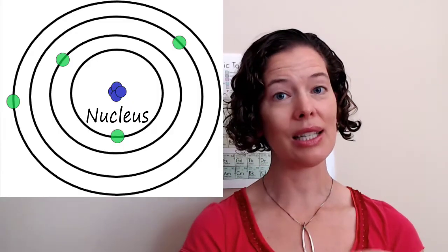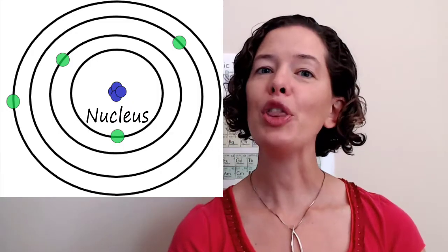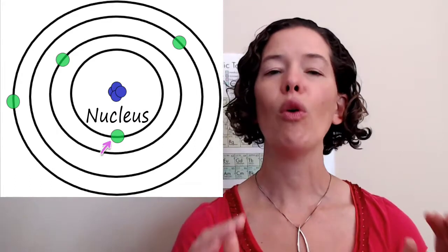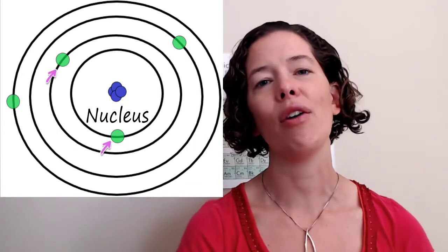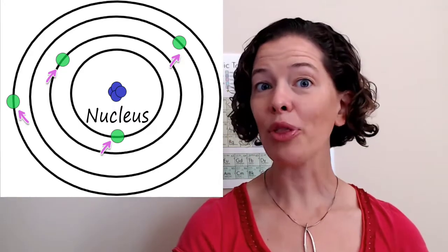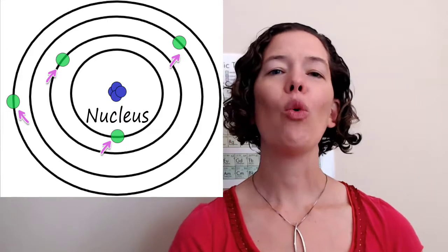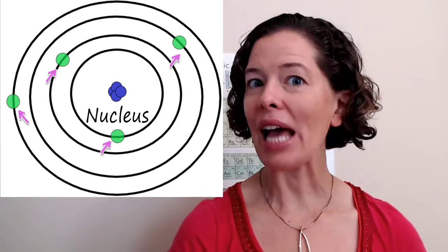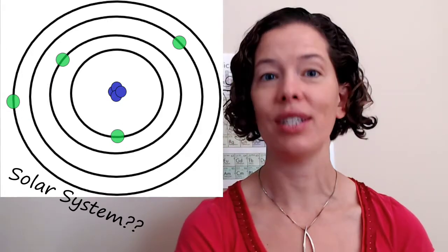So he proposed a new model of the atom where he kept the nucleus at the center but he put the electrons in discrete orbitals outside of the nucleus. The electrons were no longer just randomly out there, he put them in quantized orbits so it kind of now looks like the solar system.